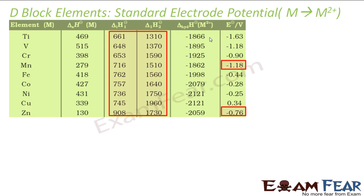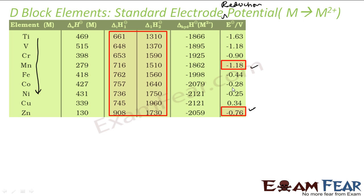Now let's look at the trend for standard electrode reduction potential. The value becomes less negative going from titanium, vanadium, chromium, and across the series. The value is becoming less and less negative, though there are some irregularities. It goes: minus 1.63, minus 1.1, minus 0.9 — there are irregularities at certain points. The irregularities are actually because of the stability of the half-filled sub-shell.